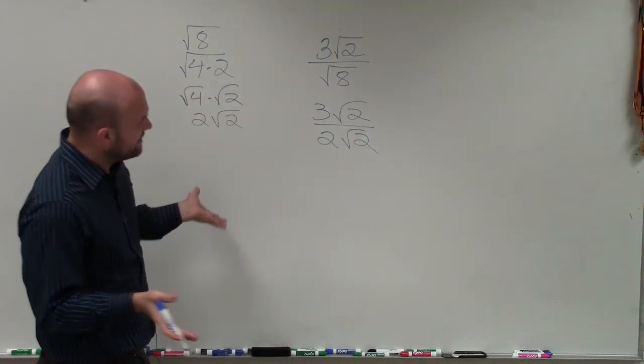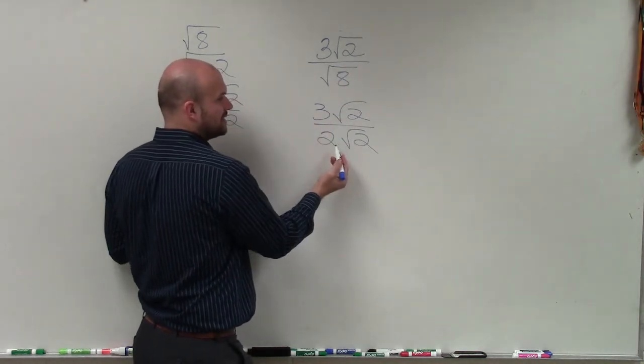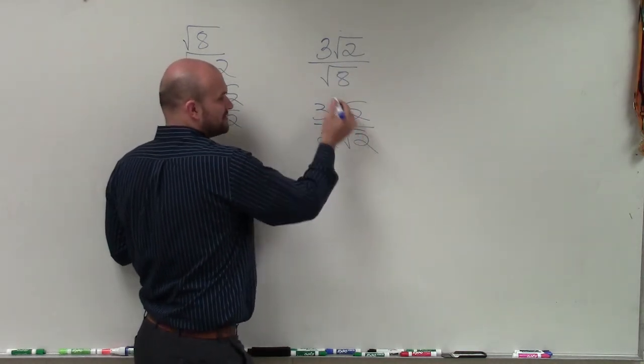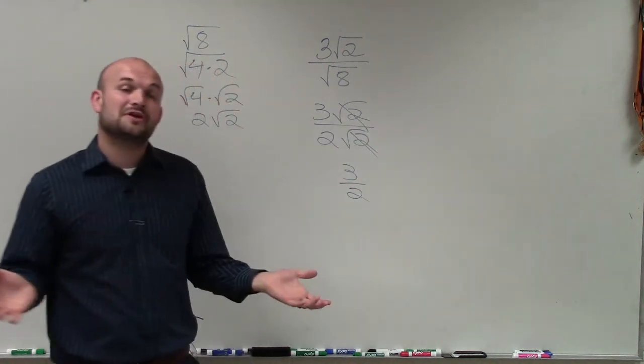What's helpful by simplifying this, we can now see I am dividing across multiplication here, that my square root of 2 divided by square root of 2, those are going to divide to 1, and I'm just left with the number 3 halves.